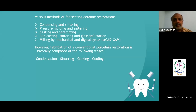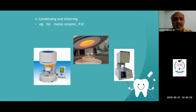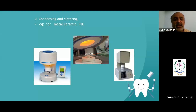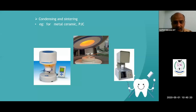After fabrication of conventional porcelain, the basic following steps are condensation, sintering, glazing, and cooling. The machines we use are called ceramic furnaces — we have them in our lab. Each ceramic furnace has an individual program which has been pre-programmed by the manufacturers.